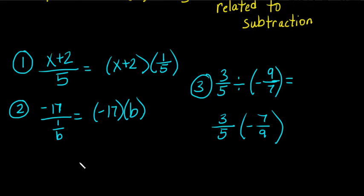Number 2 looks a little weird, but we're going to do it the same way. We're going to think about it the same way. Negative 17 divided by 1 over B. Well, I'm going to take the numerator, negative 17, and multiply it by the denominator's reciprocal, which is B. So don't let things like this scare you when they look like this.